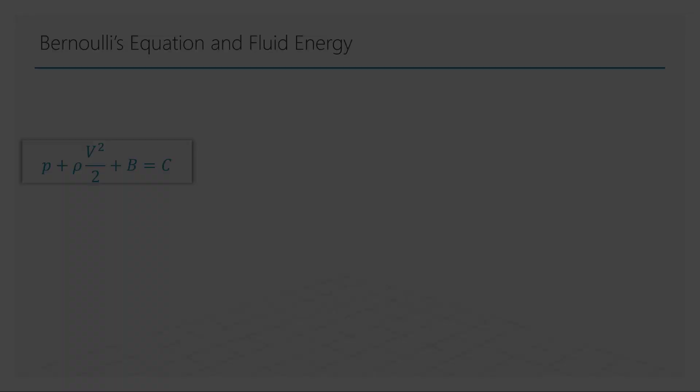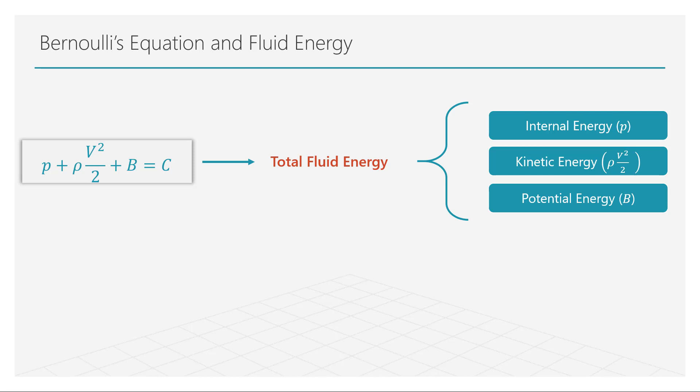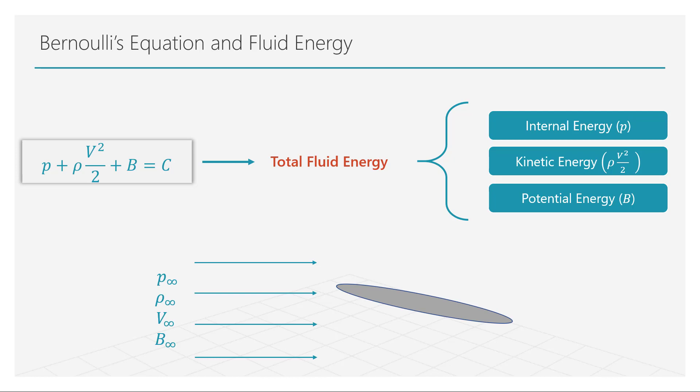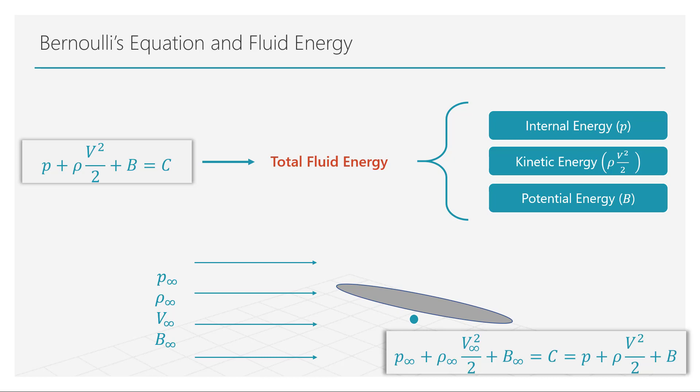Bernoulli's equation represents the conservation of energy in the fluid. Each of these terms stands for the internal, kinetic, and potential energy of the fluid respectively. Since the sum of these terms is constant everywhere in the fluid domain, most applications of Bernoulli's equation calculate the value of the constant based on the far-field values and use that constant to calculate flow properties at other locations.